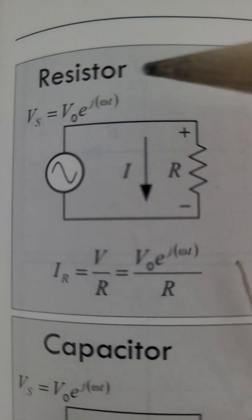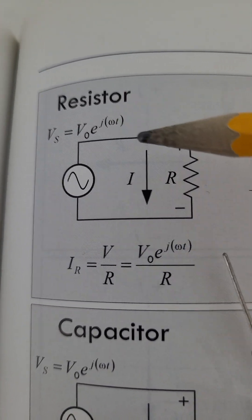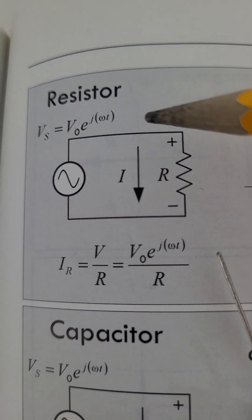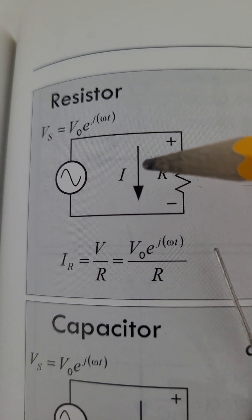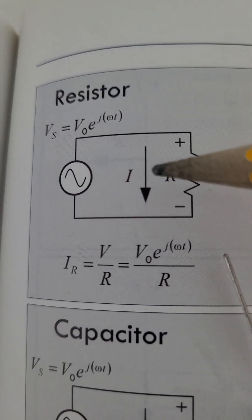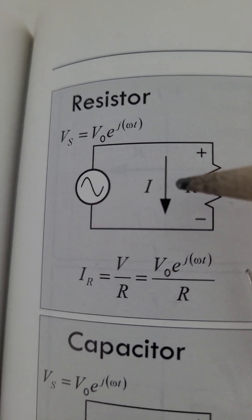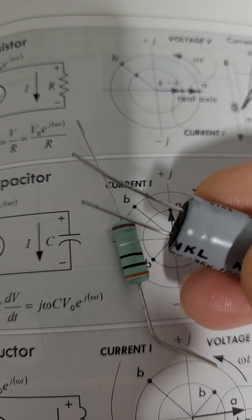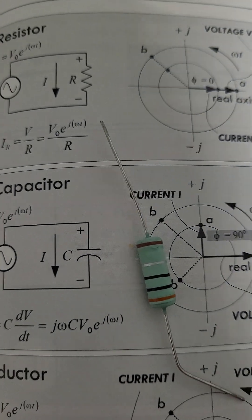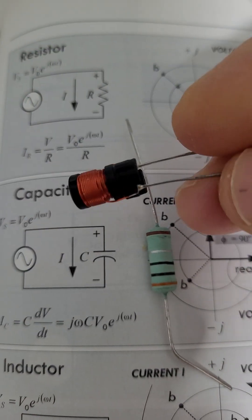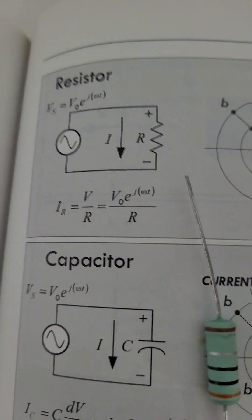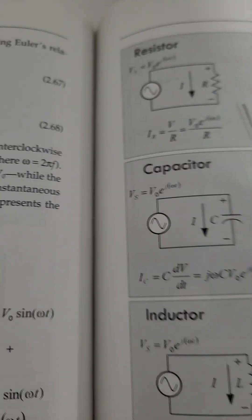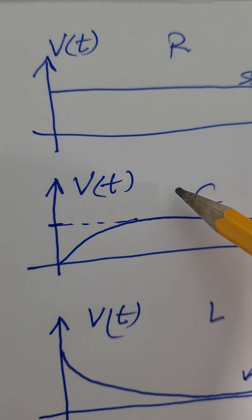Every element — whether a diode, resistor, capacitor, or inductor — has two types of analysis. The first is called DC response or steady-state response, and the second is called transient response. Transient response asks: what will happen at the moment we apply voltage across the resistor, capacitor, or inductor? This is called transient analysis.